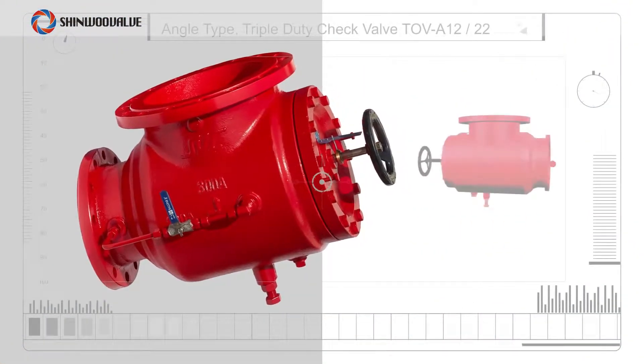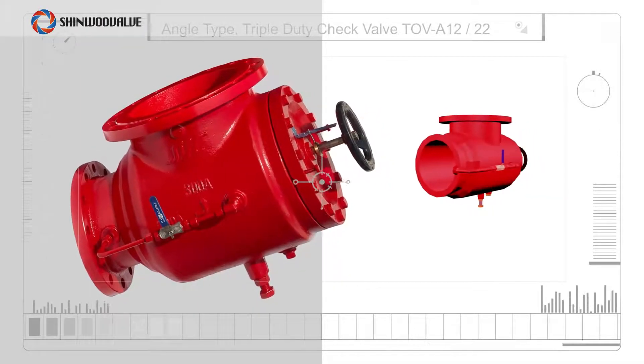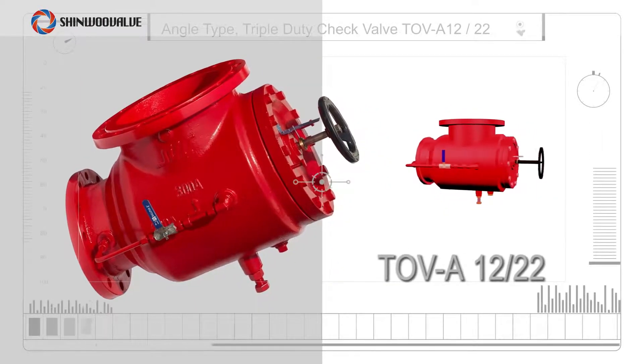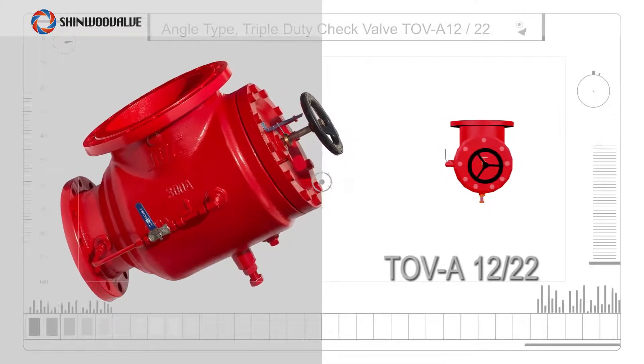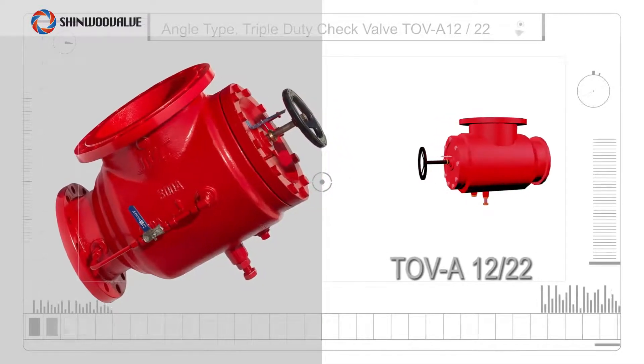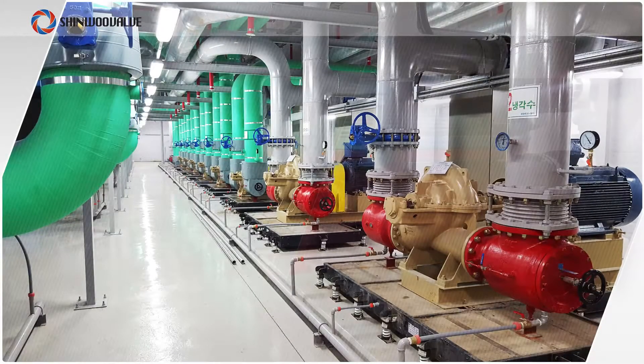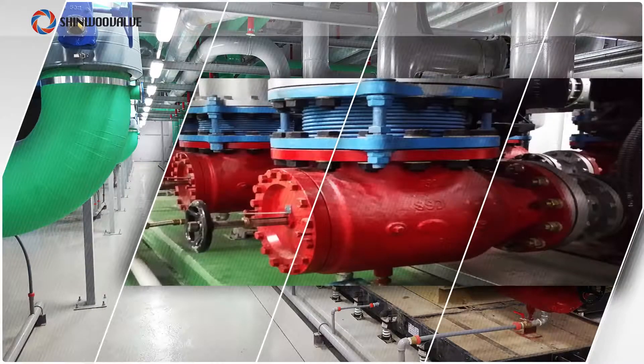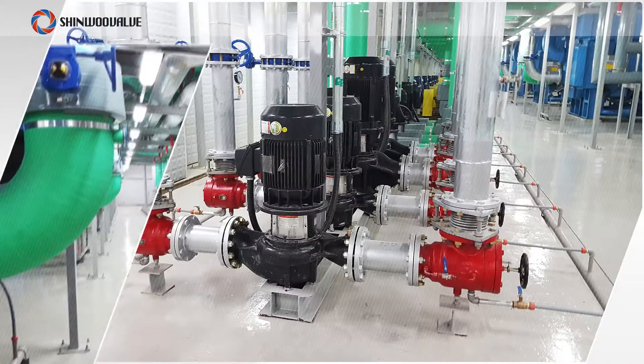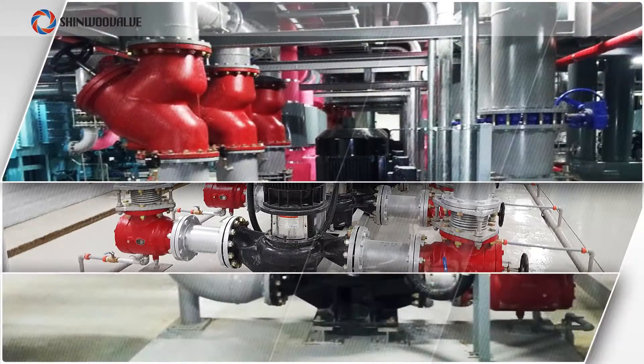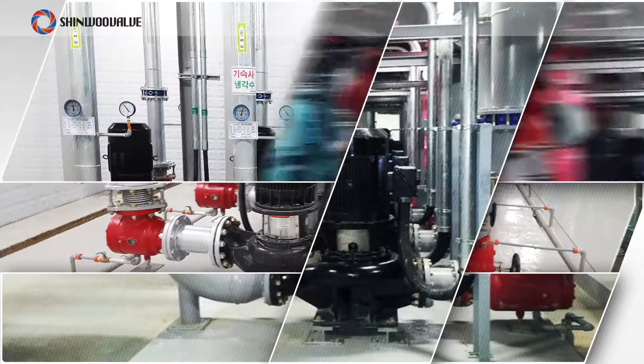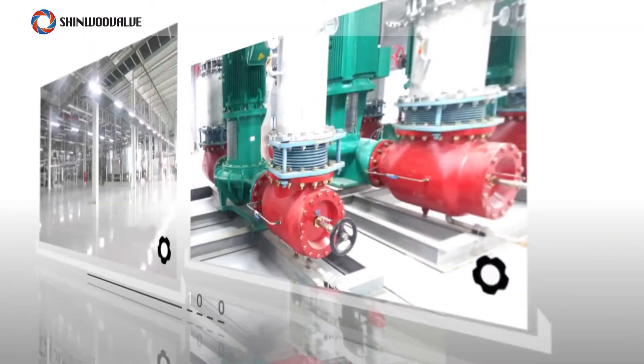Angle type triple-duty check valve, TOV-A for short, is an upgraded version of triple check valve TOV. Shinoo's TOV-A models further reduce construction costs and construction periods. Not to mention it also reduces the installation area of reducers, elbows and other features for outstanding on-site efficiency and convenience.